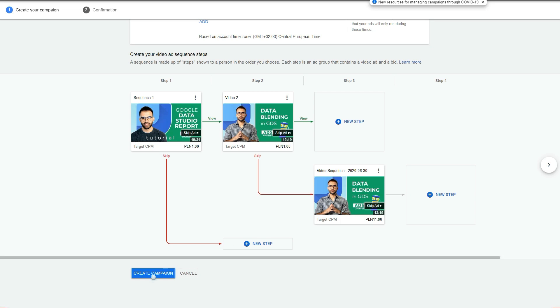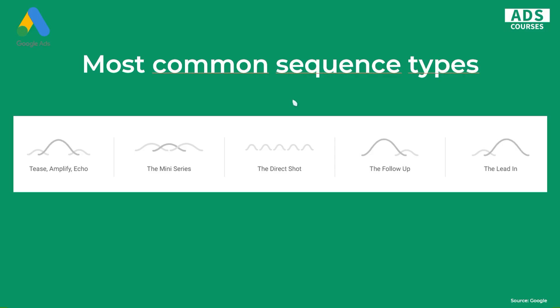After that, just click 'Create Campaign' and you're done. Creating sequence campaigns is very easy and straightforward. Now I'll talk about the most common sequence types that you can use. This data is from Google, from larger advertisers that actually use this. There are five most common sequence types.